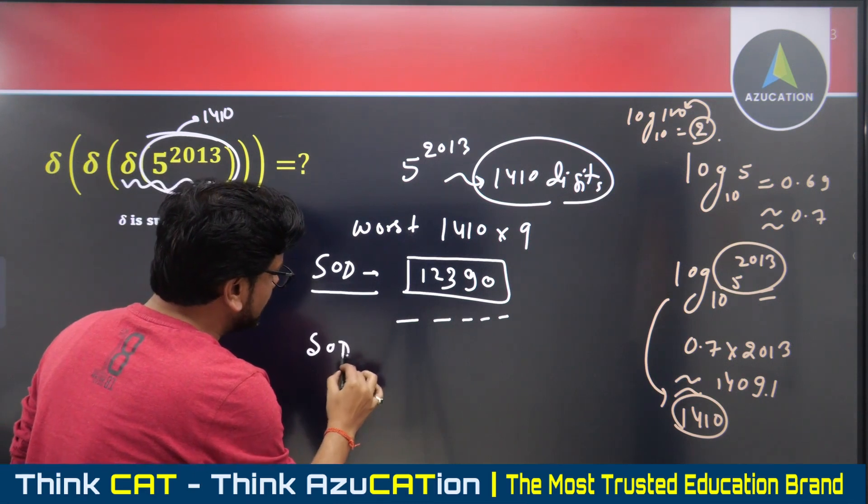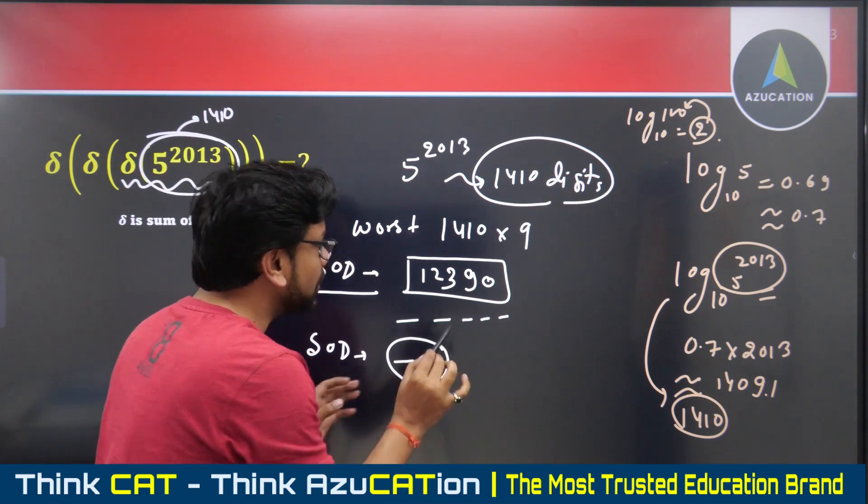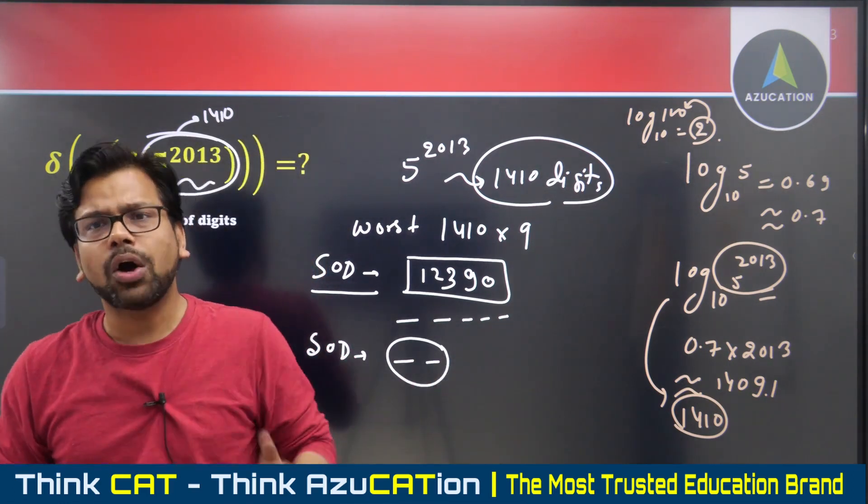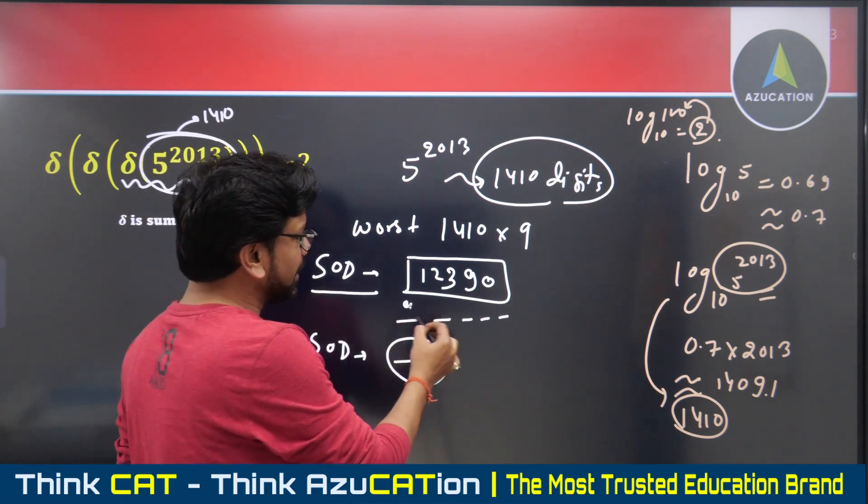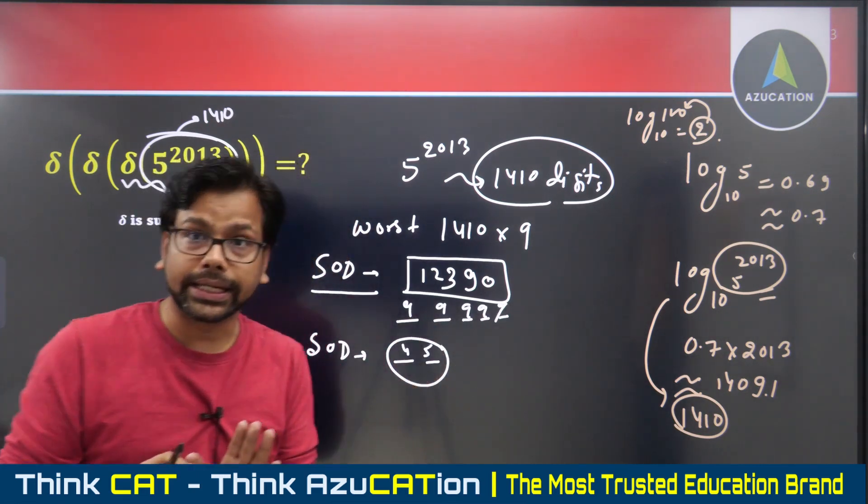When I find the second summation of digits, the second summation will actually give a double-digit number. I know this for sure. I'm 100% certain it will give a double-digit number, because even if all five digits are nine, that gives 45, a double-digit number.